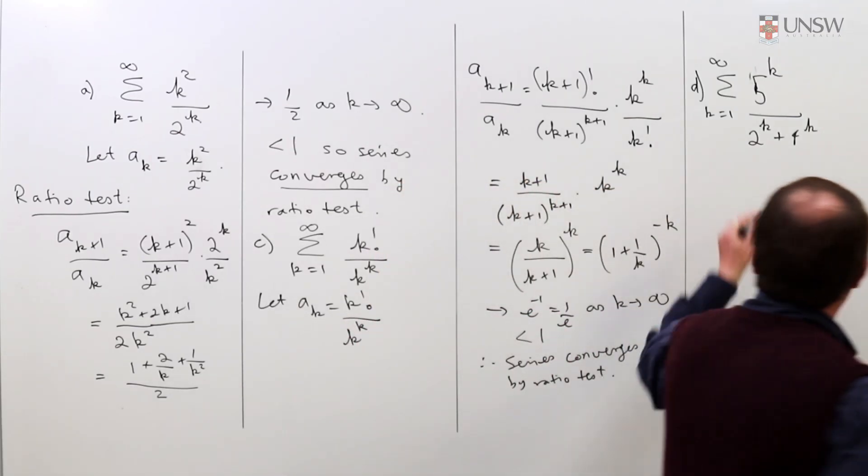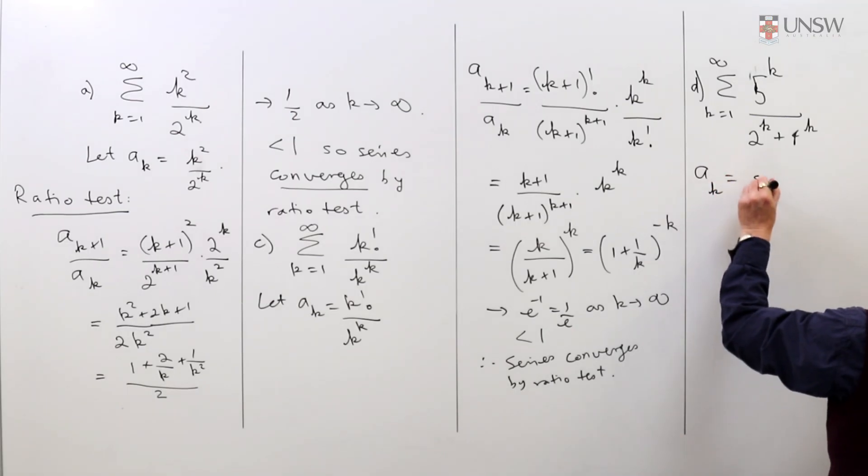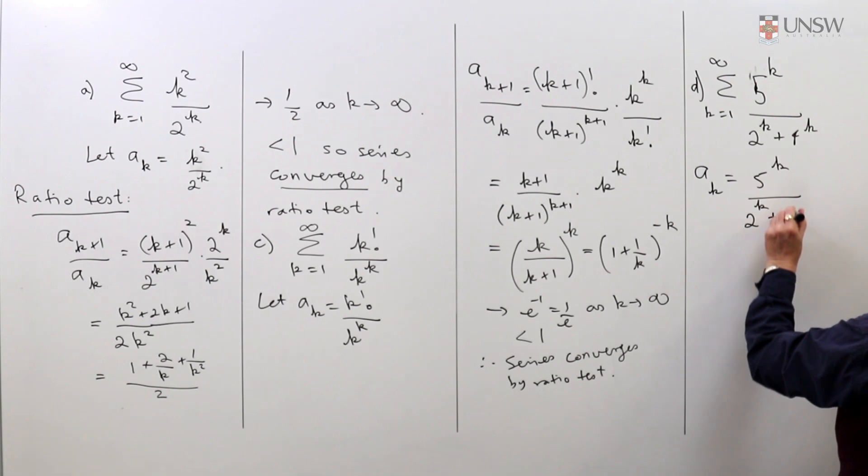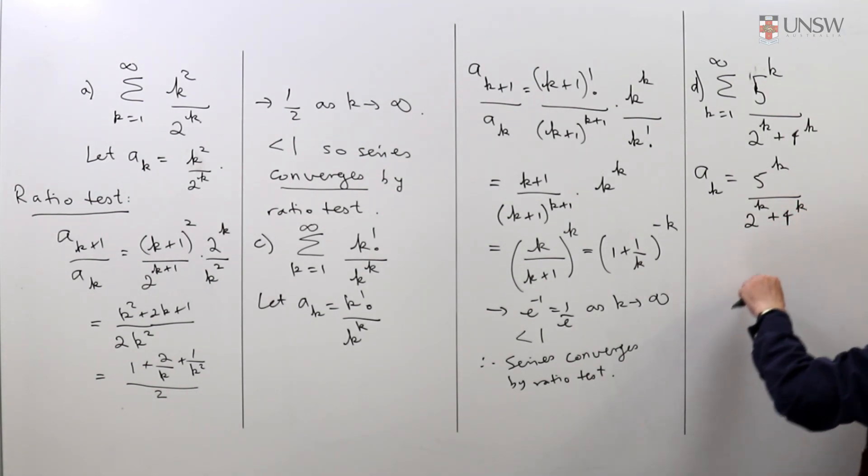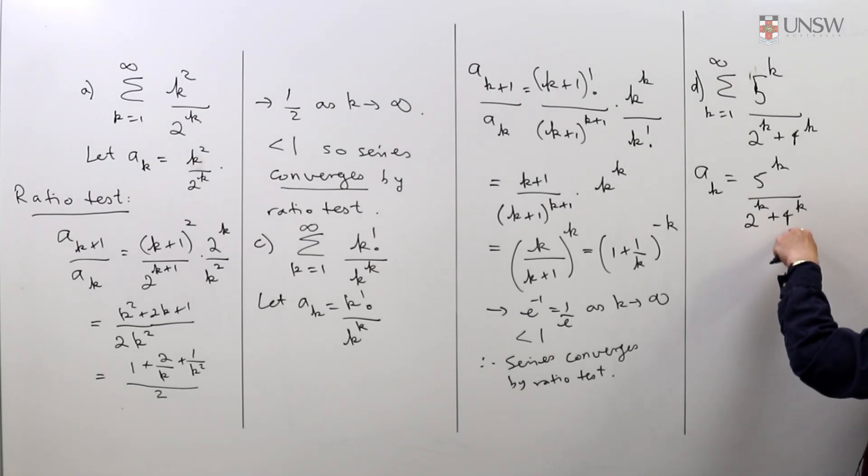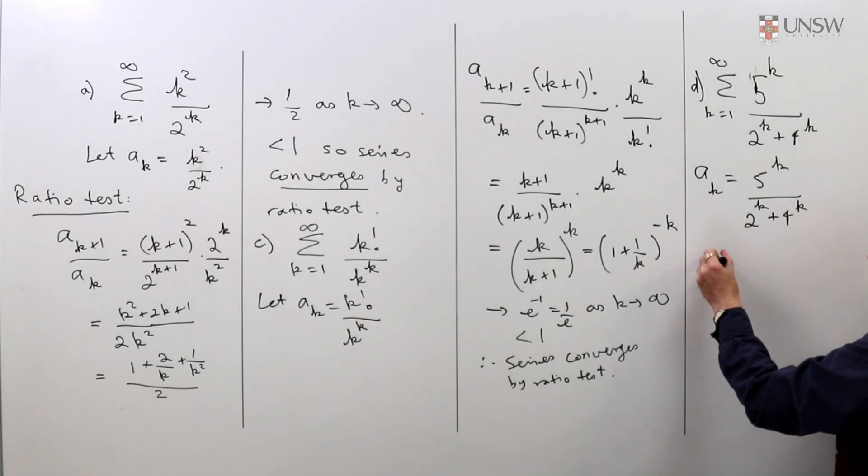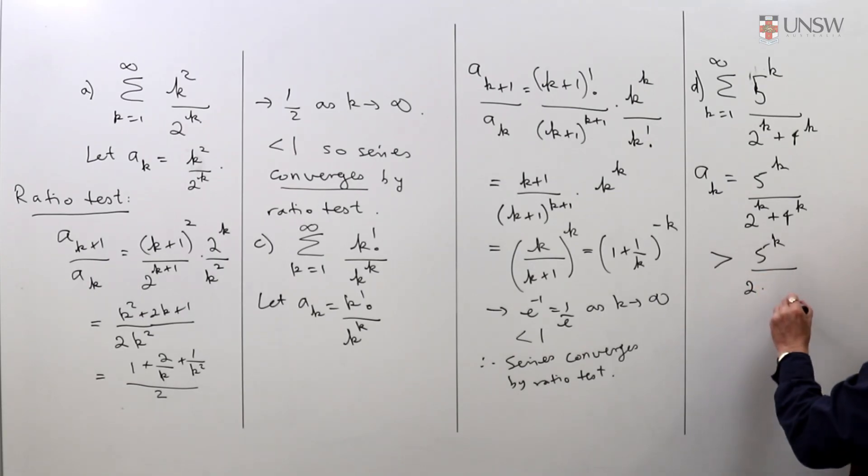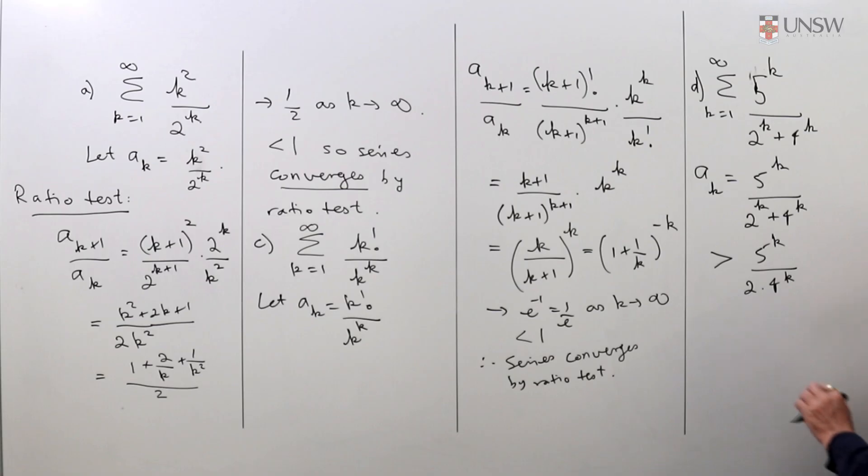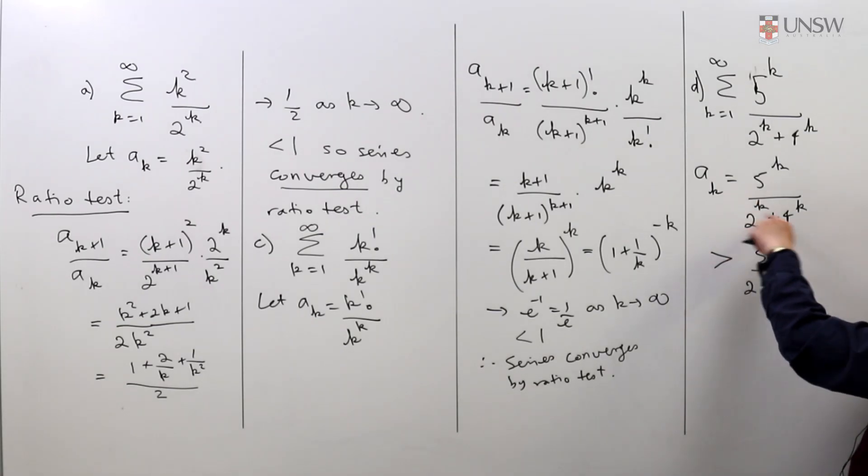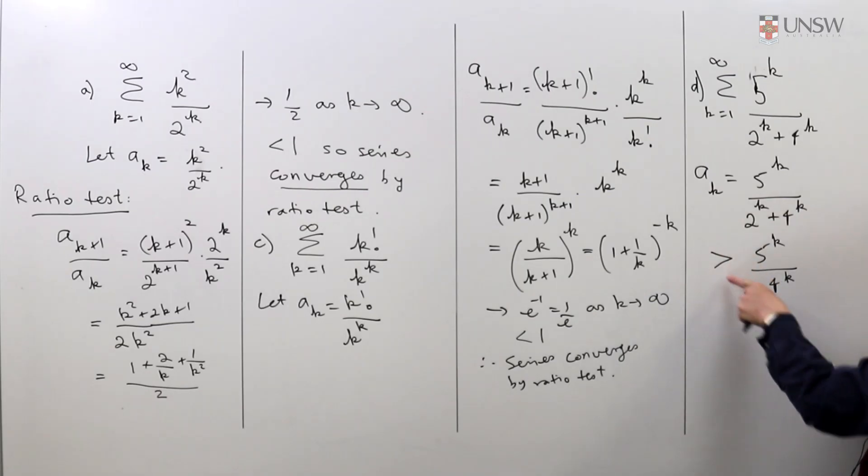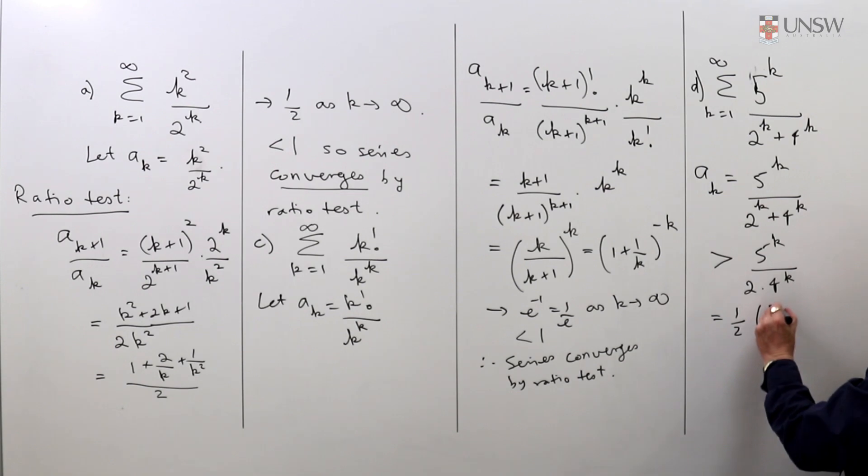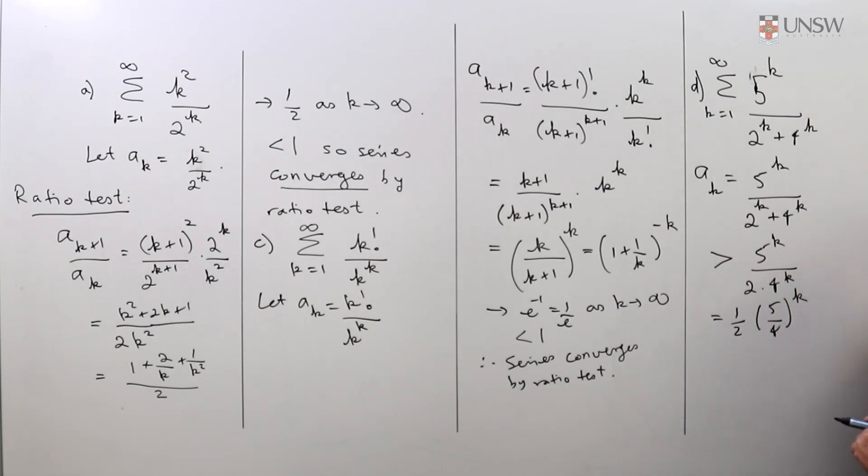What I would do is look at the general term and try to show that the general term is not getting small. In the denominator 4 to the k is bigger than 2 to the k. When I'm dividing by it I can replace the 2 to the k with a 4 to the k, so this is bigger than 5 to the k on 2 times 4 to the k. I can write this as 1 half times 5 quarters all to the k. This number is clearly getting very big, so this is going to infinity as k goes to infinity.